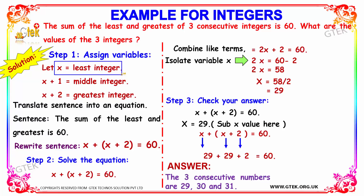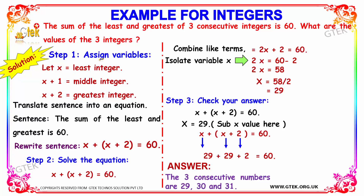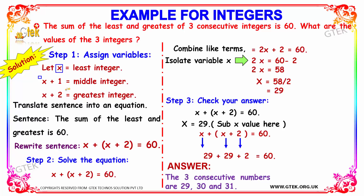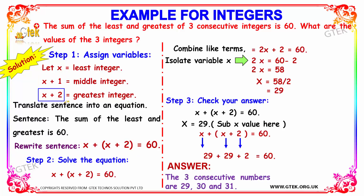If x is the least integer, then x plus 1 is the middle integer and x plus 2 is the greatest integer. We then translate the sentence into an equation. Since the sum of the least and greatest is 60, we write: x plus (x plus 2) equals 60.